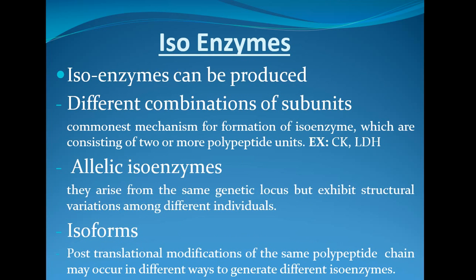Now let us go into more details about isoenzymes. Isoenzymes can be produced by different combinations of subunits — they are not single gene products but multiple gene products. The commonest mechanism for formation of isoenzymes is because of different combinations of subunits consisting of two or more polypeptide units.